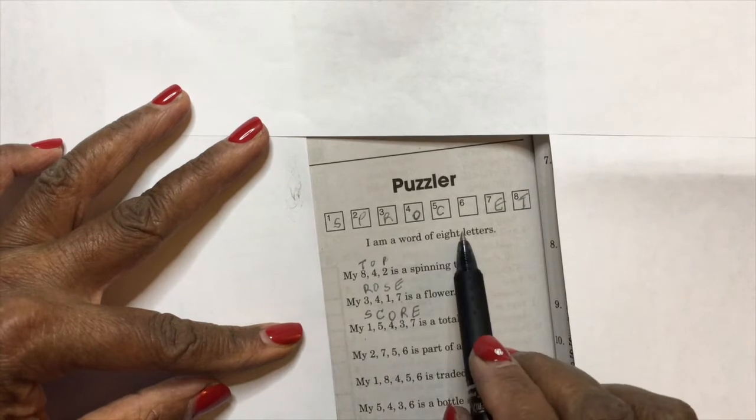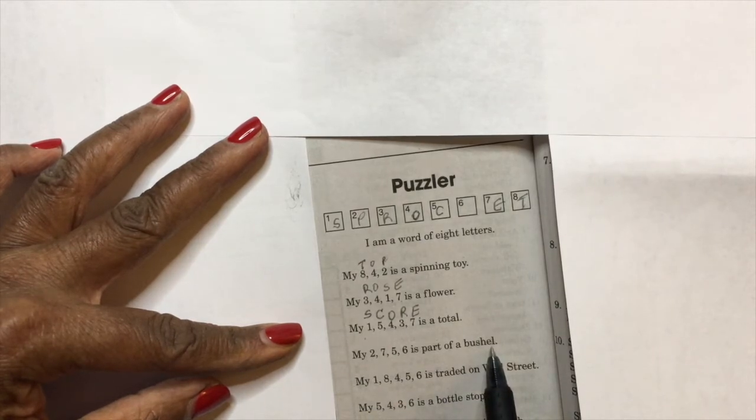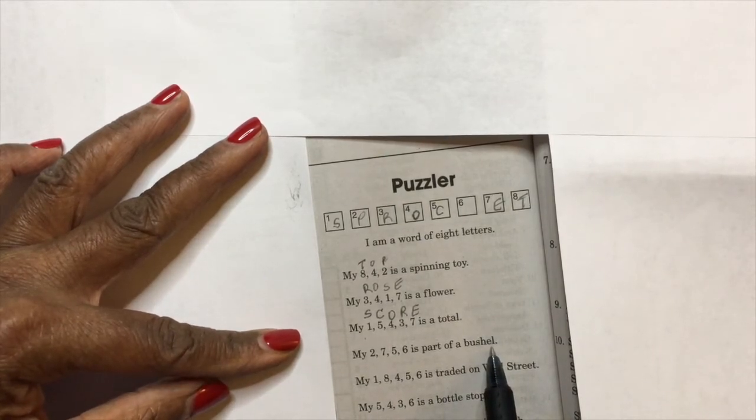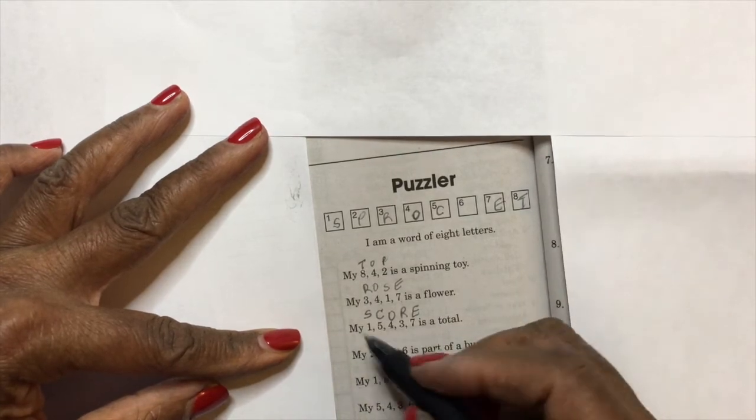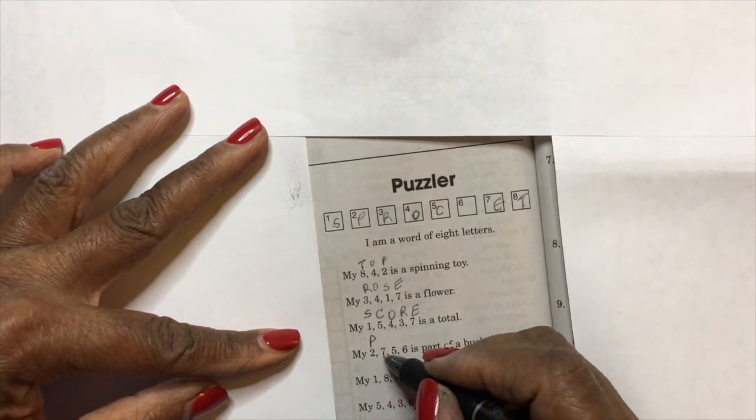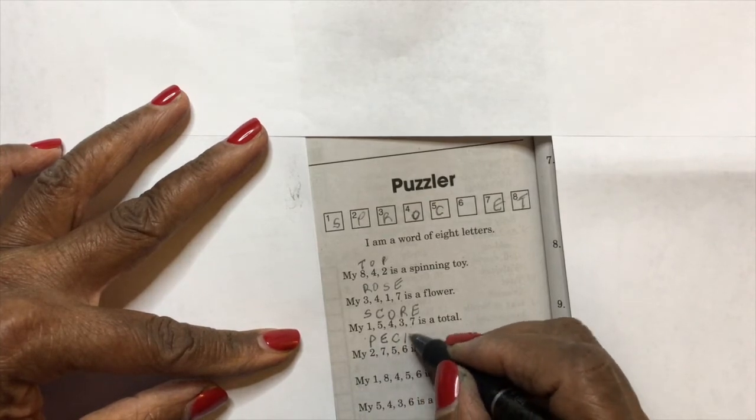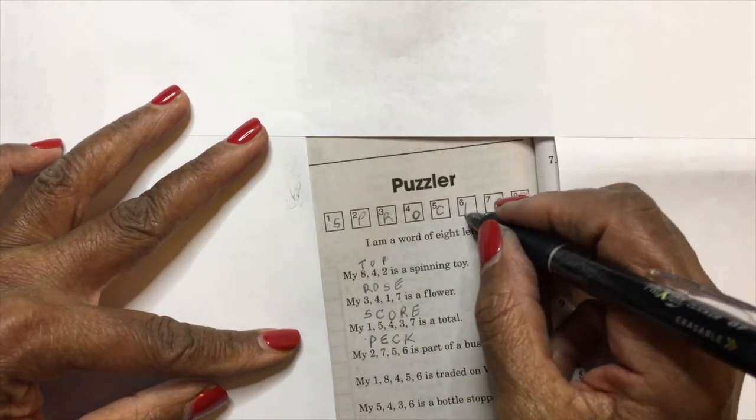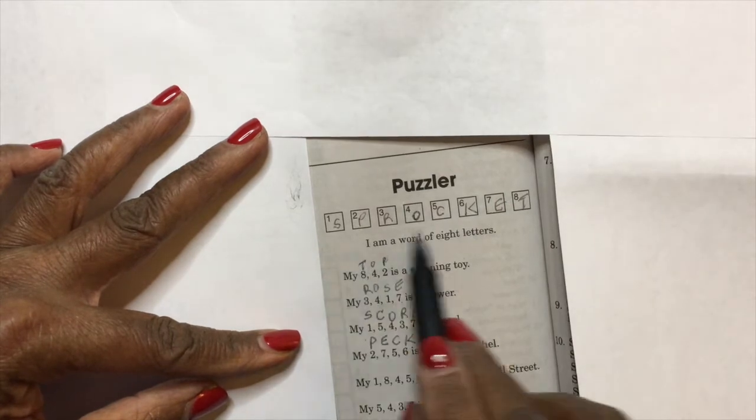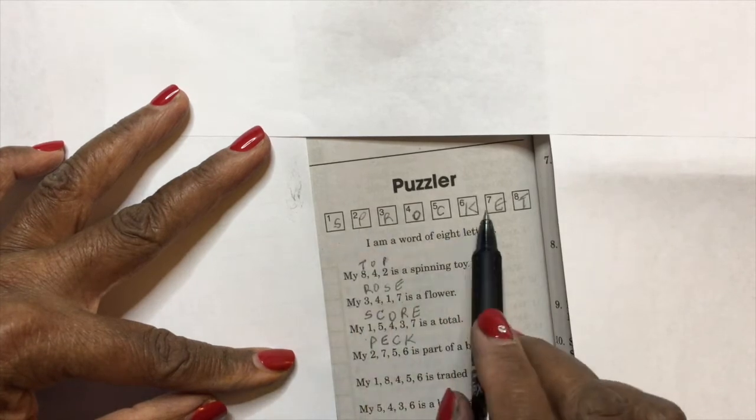this word is, if these clues are correct. 'My two, seven, five, six is part of a bushel.' Hmm, part of a bushel. Oh shoot, I don't know a lot about agriculture. Well, we know that two is a P. Oh, a peck, maybe? Seven is an E, five is a C, and six would be K. Okay, maybe we're right. That means this word would be 'sprocket.' But let's keep going—we're not sure if we're correct that this is